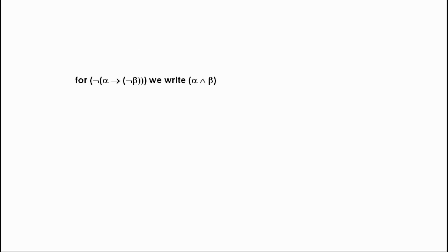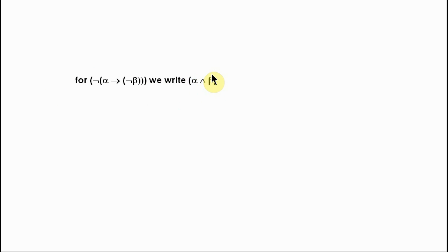The first expression I'm going to introduce by definition: if alpha and beta are wffs, for this lengthy string of symbols, we are going to instead write a much shorter string involving this new symbol — this inverted V. Wherever this long string of symbols appears in our language, we are going to be able instead to write this much shorter string involving the inverted V.